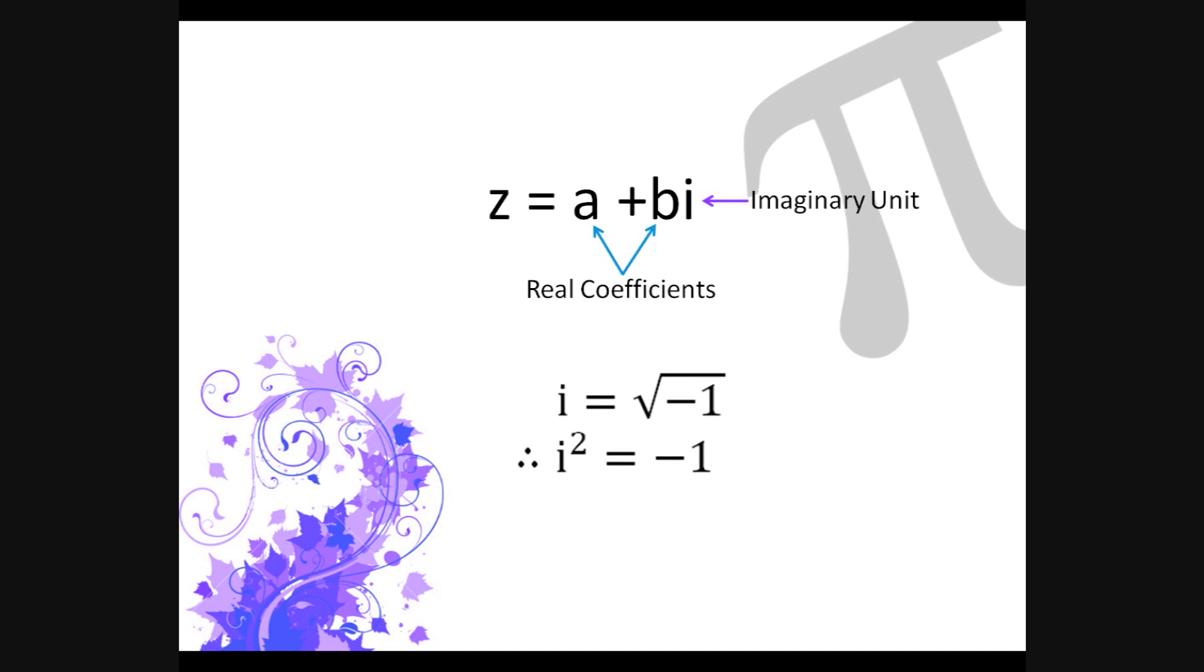The complex number z equals 2 plus 3i, the real part of z equals 2, and the imaginary part of z equals 3. This shows that z is the real coefficient of the imaginary part. This demonstrates how 3 is a real number, and as such is the coefficient of the unitary imaginary number.